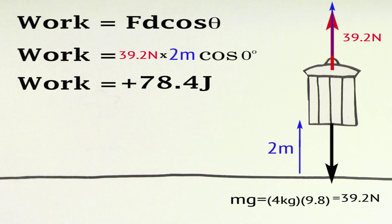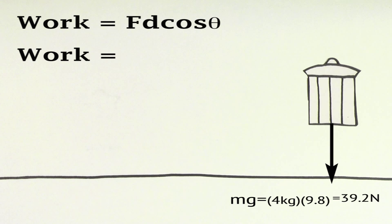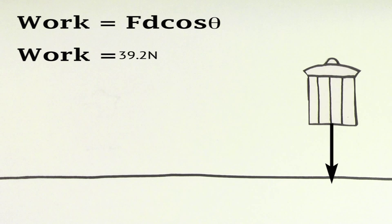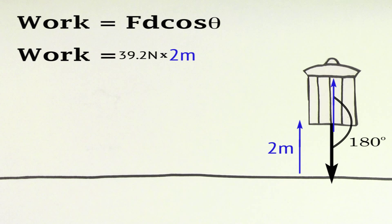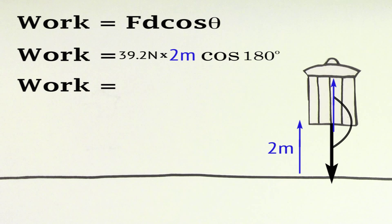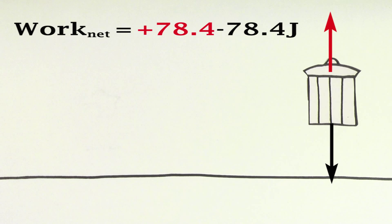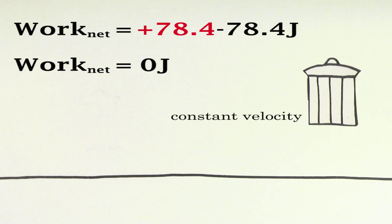To find the work done by the force of gravity, we use the force of gravity, which is again 39.2 newtons. The displacement is again 2 meters, but the angle between the direction of the displacement and the gravitational force is 180 degrees because the displacement points up and the gravitational force points down. So the work done by the gravitational force is negative 78.4 joules, which means the net work done on the trash can is zero. That makes sense because since the trash can moved upwards with constant velocity, there was no change in the kinetic energy of this object.